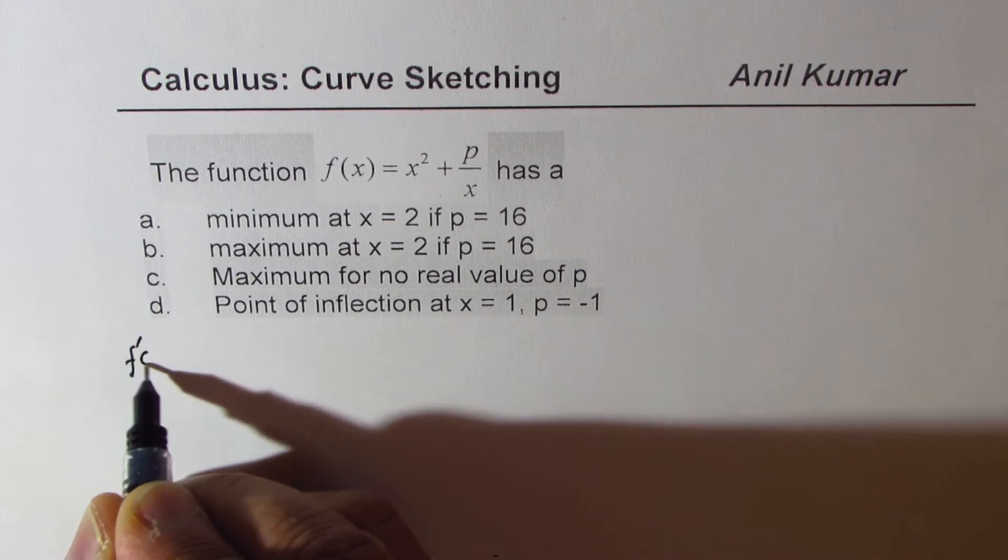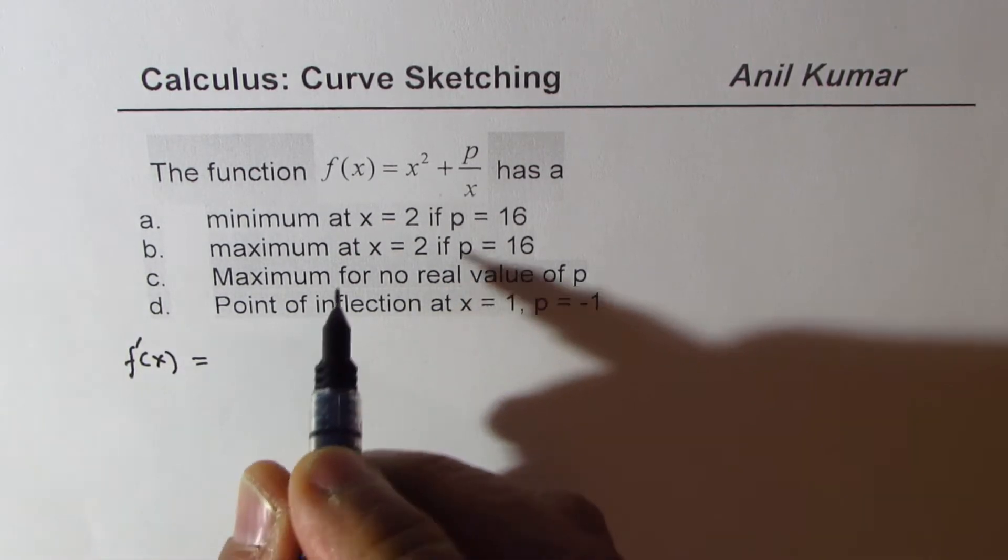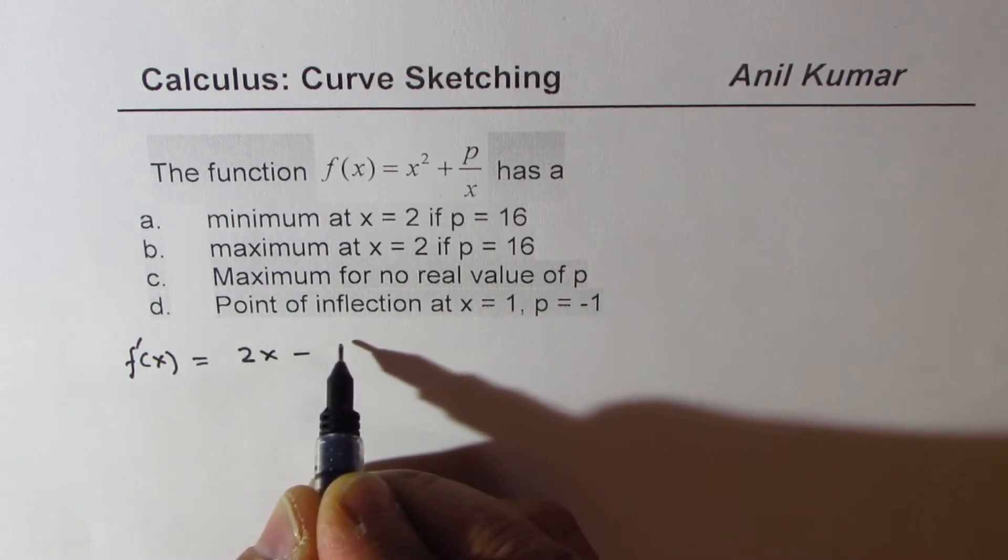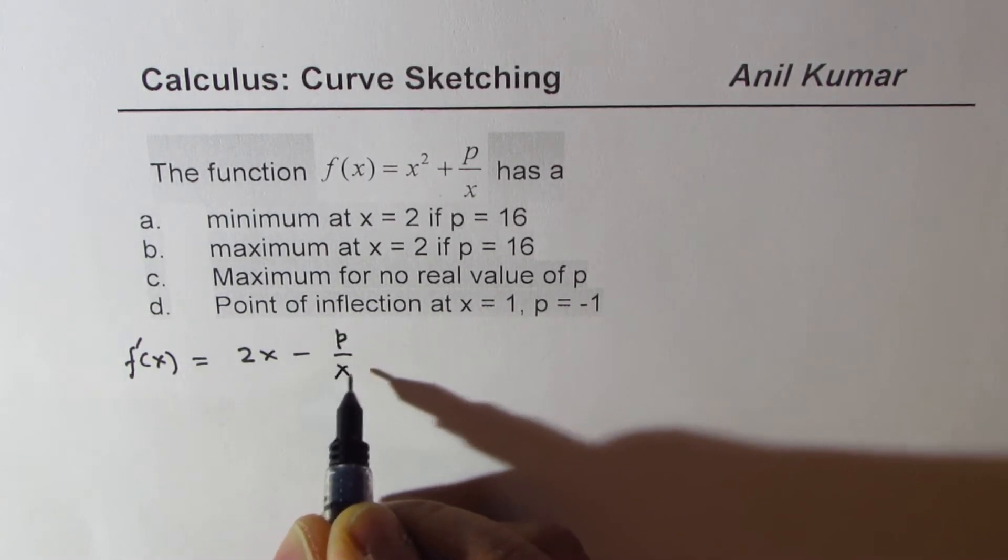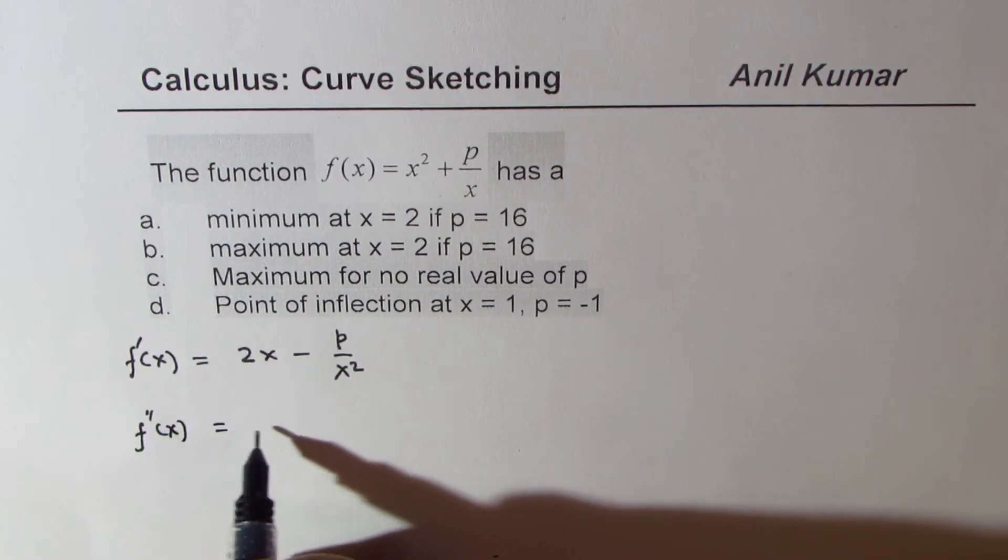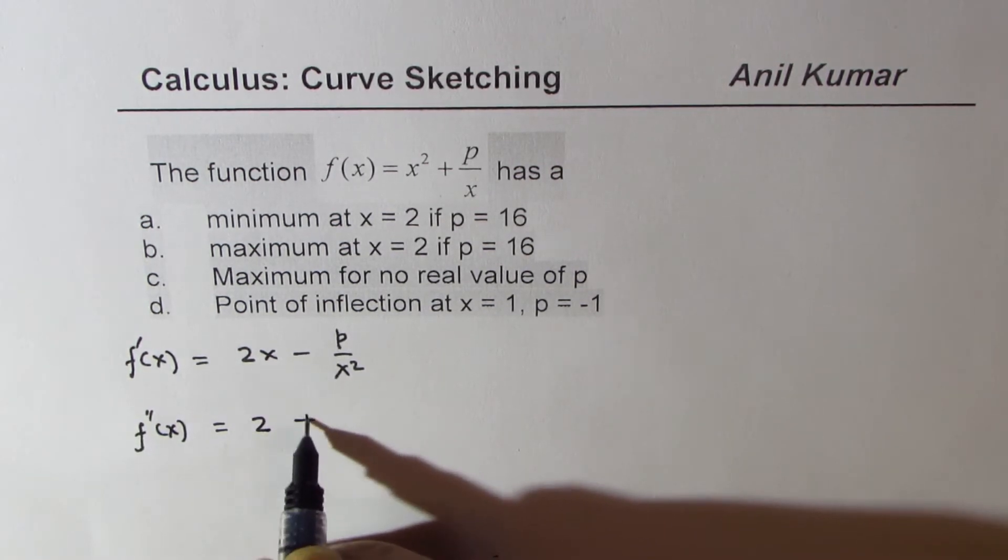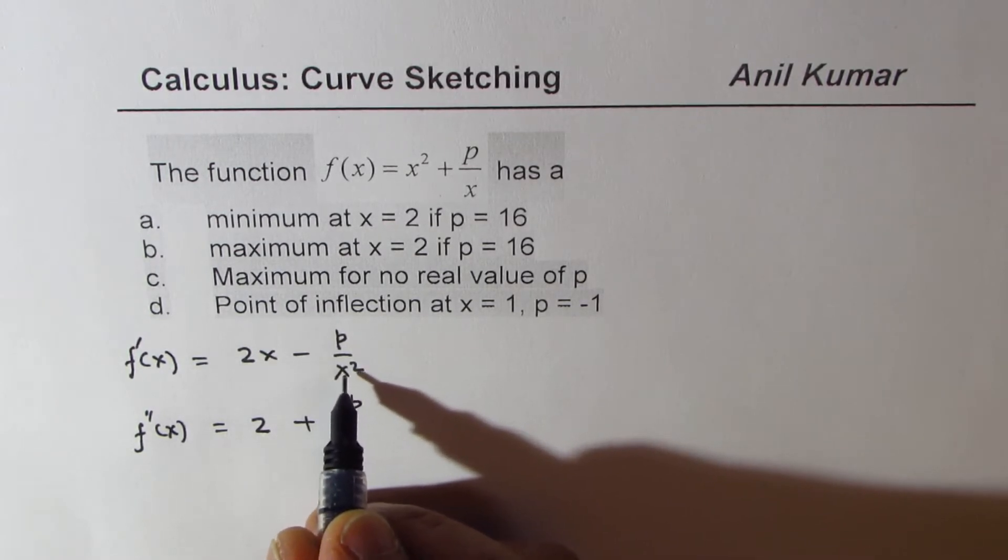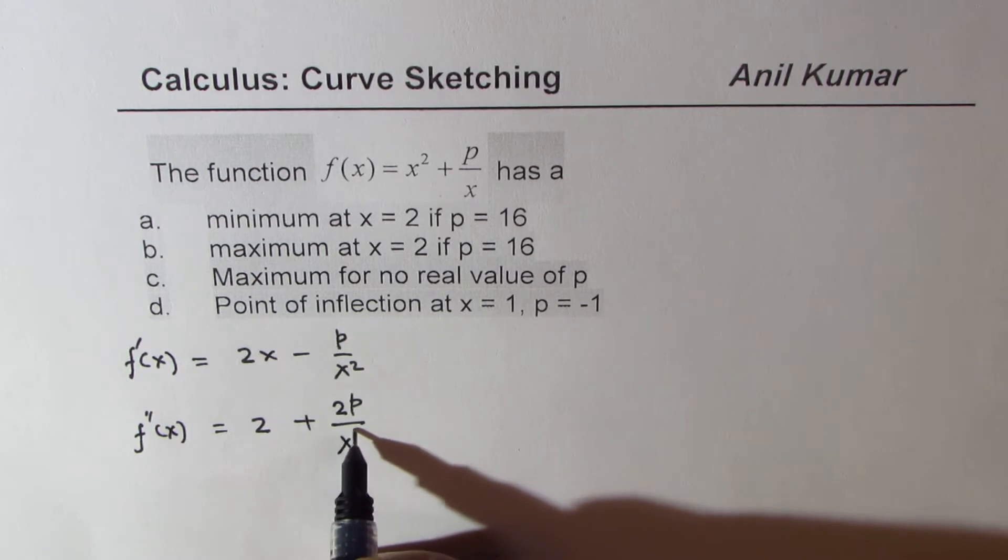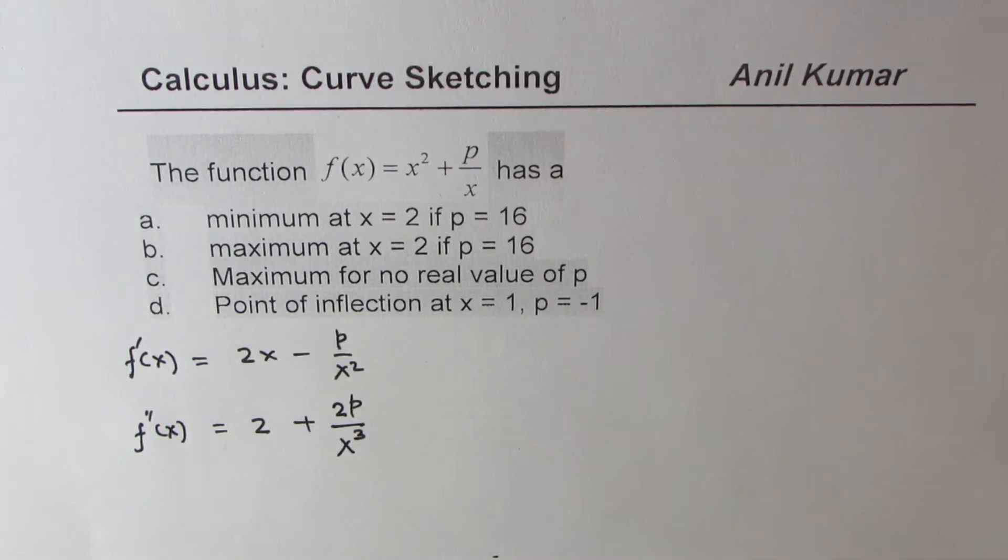So without thinking much, we need to find the derivatives. First derivative is 2x minus p over x squared, and the second derivative is 2, that becomes positive, then minus 2 times, so 2p over x cubed. So these are your derivatives.